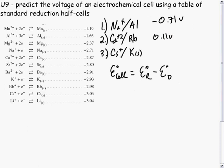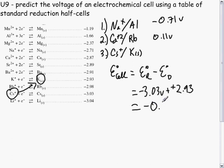For this last reaction, cesium plus 1 and potassium, this will again be a non-spontaneous reaction. It is negative 3.03 volts minus negative 2.93, minus 0.10 volts.